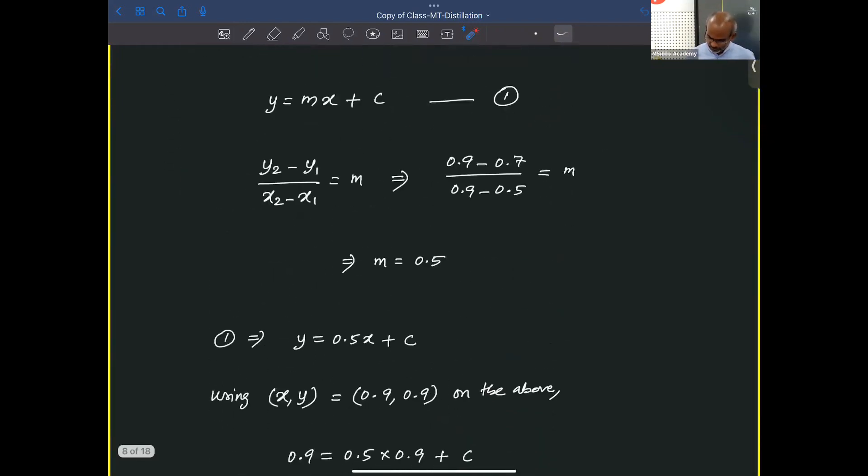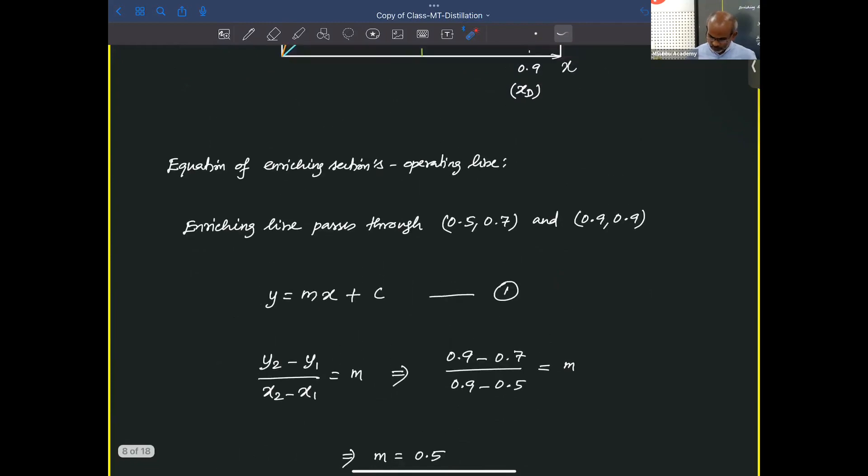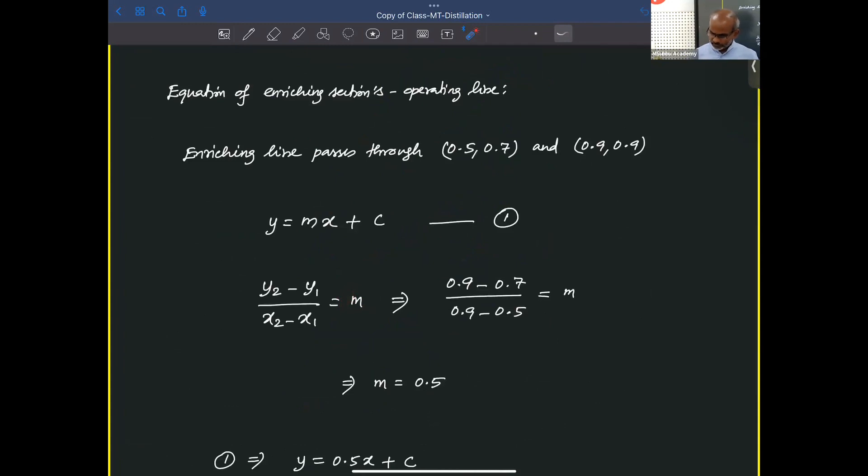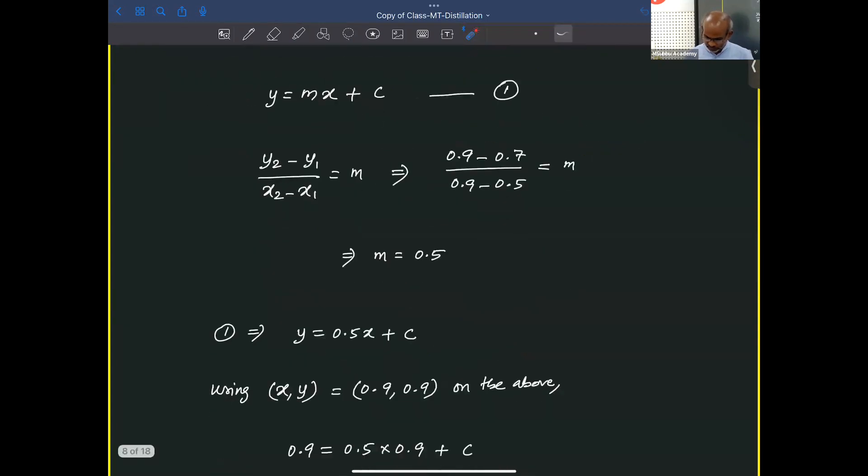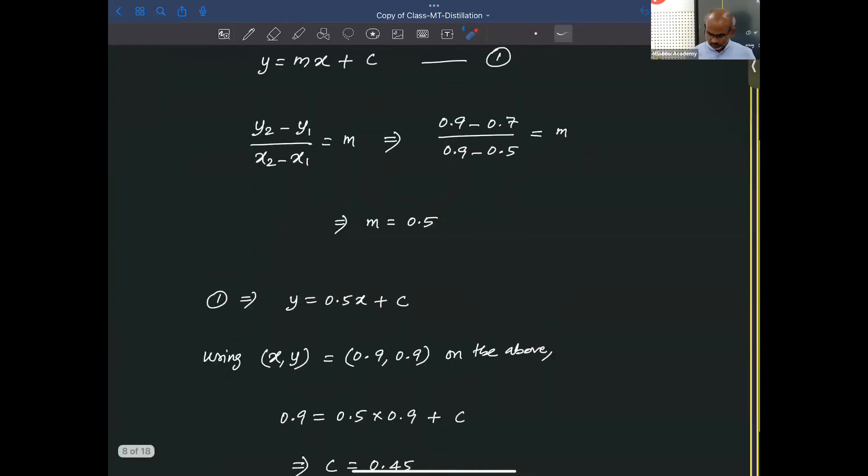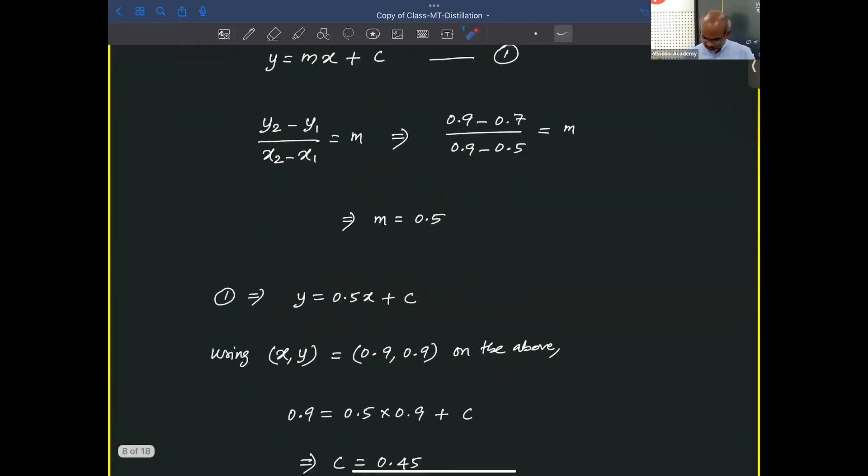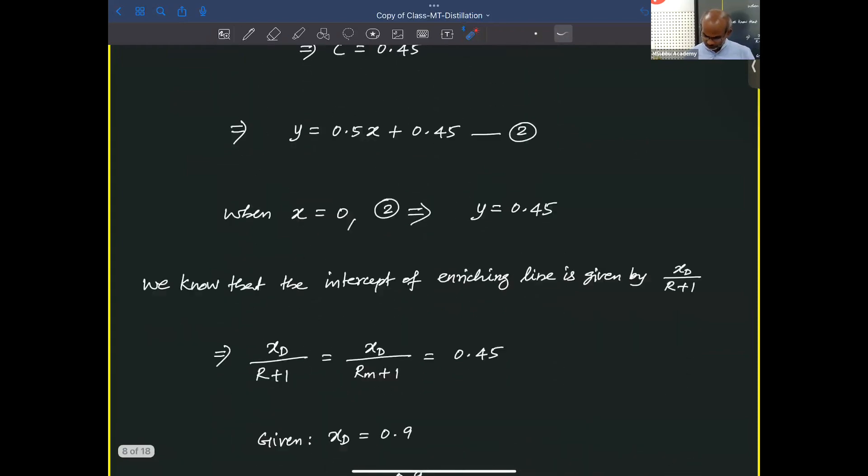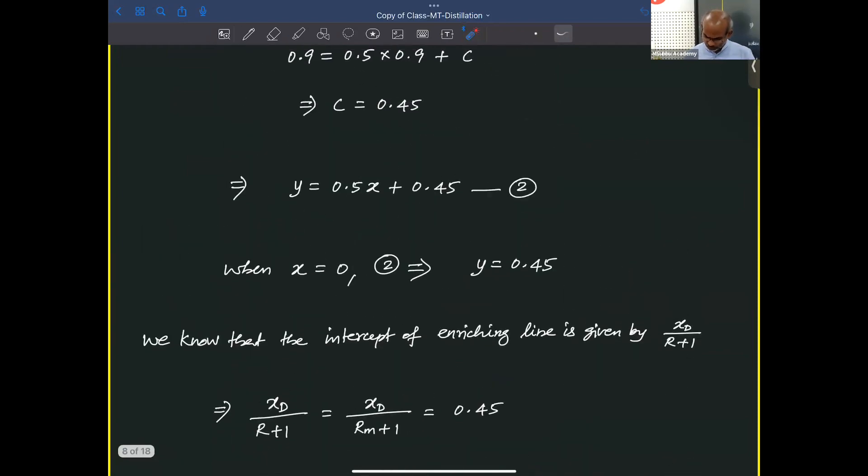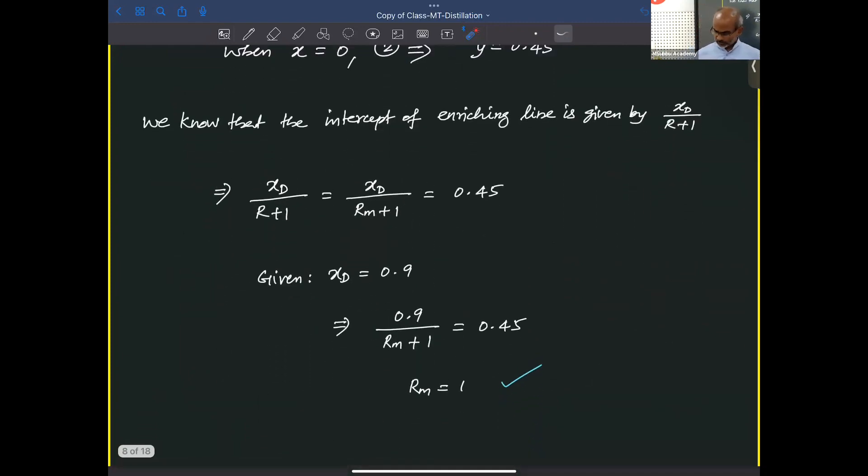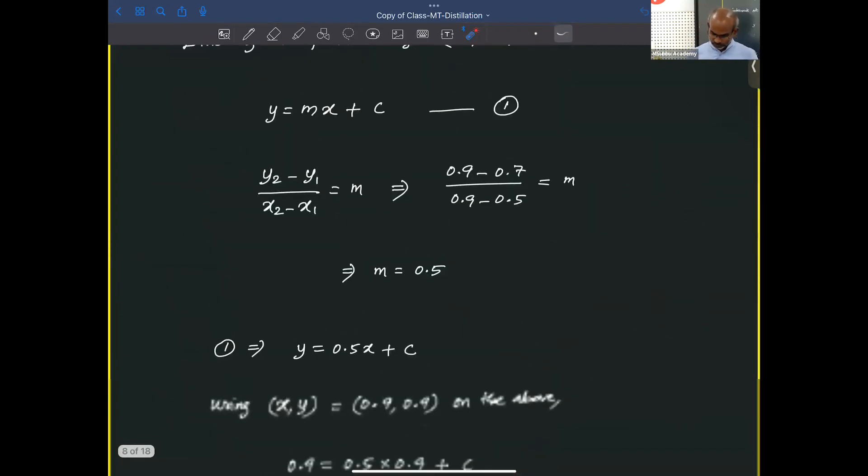This equation is y = mx + c. We have these two data points. We can solve for m, which is delta y by delta x. Delta y is 0.9 minus 0.7, and delta x is 0.9 minus 0.5. From that, we are getting this slope. Using any of the data points, we can get the intercept. That intercept is 0.45, which is XD/(RM+1). From that, we are solving for RM, which is coming as answer of 1.